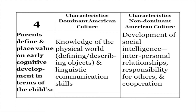Let's look at how parents define cognition in early development. In the dominant culture: knowledge of the world, being able to define and describe, and linguistic communication skills. In the non-dominant culture, development of social intelligence is more important — interpersonal relationships, responsibility for others, and cooperation are more valued.